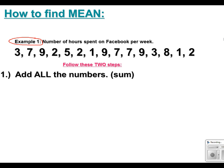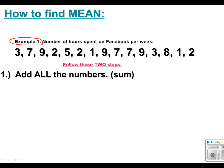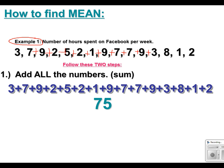It only takes a couple of steps. The first step when you find the mean — mean is average — is you add all the numbers up. So we're going to be adding three plus seven plus nine and all the rest of these numbers. You can do it pencil and paper or you can put it in your calculator, either way is fine. Adding all those up, I got 75.